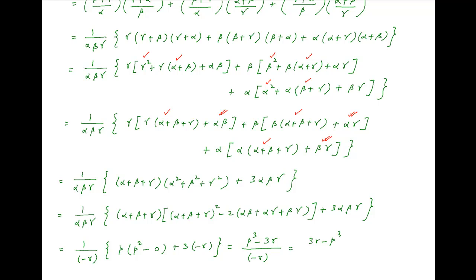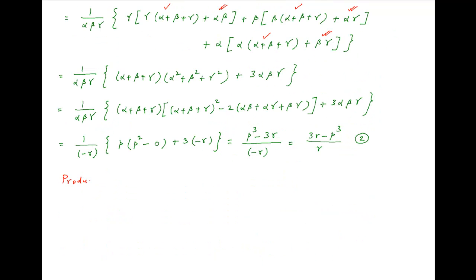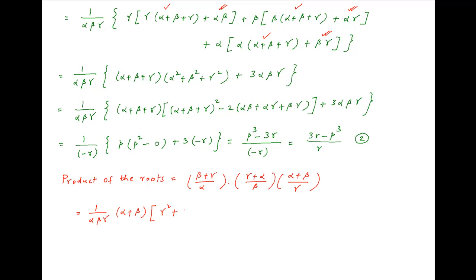This equals (3r - p³)/r. Let's call this Result 2. Finally, the product of the roots of the desired equation equals (beta + gamma)/alpha · (gamma + alpha)/beta · (alpha + beta)/gamma, which equals (1/alpha·beta·gamma) · (alpha + beta)·(gamma² + gamma·(alpha + beta) + alpha·beta).